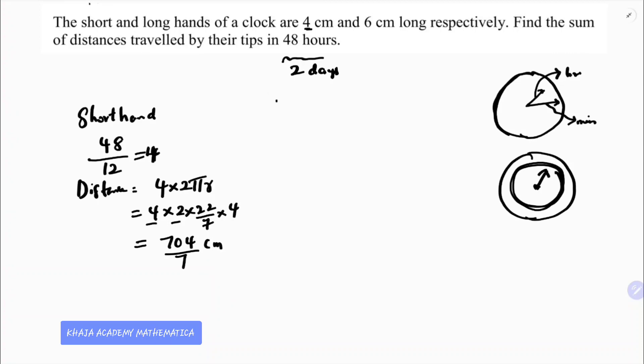For the long hand, that is the minute hand, in 48 hours - the longer hand whose radius is 6 centimeters. For one hour it will complete one circle, so for 48 hours...